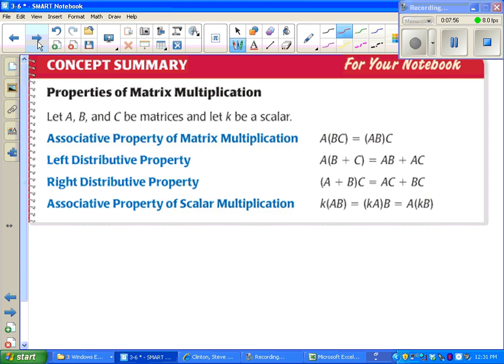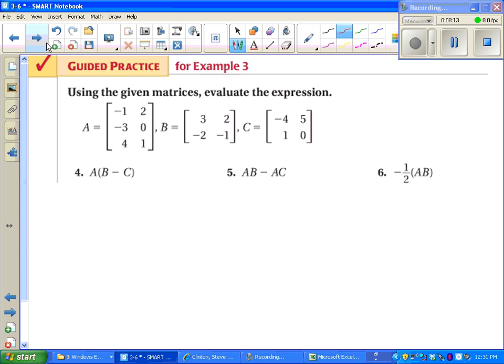Concept summary. We just learned some properties of multiplication. Associative property. Left distributive property and right distributive property. And scalar multiplication. Everything kind of works out the way you want it to. Just like with real numbers. At this point, you can pause the video and try some of these on your own. Or you can do these later.